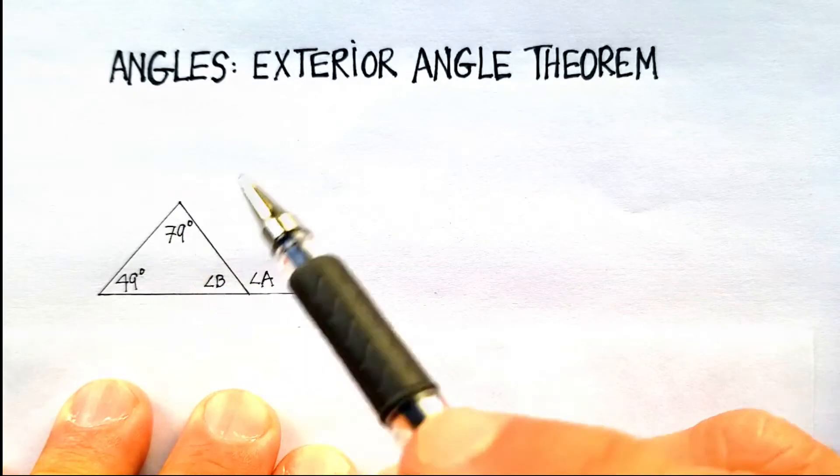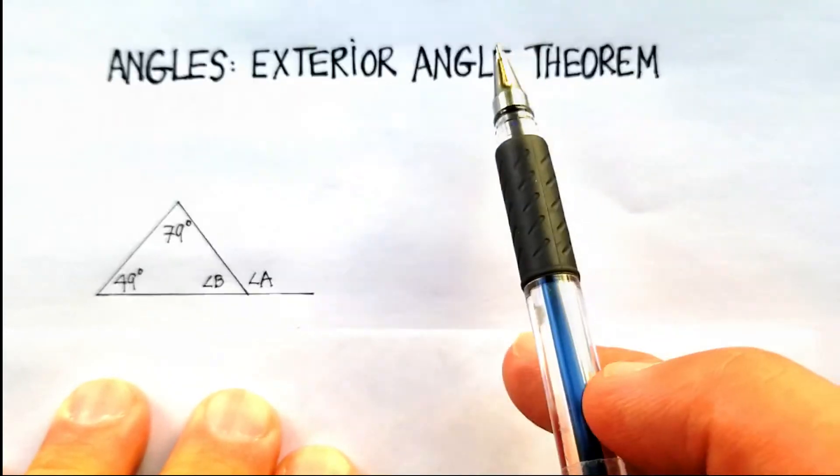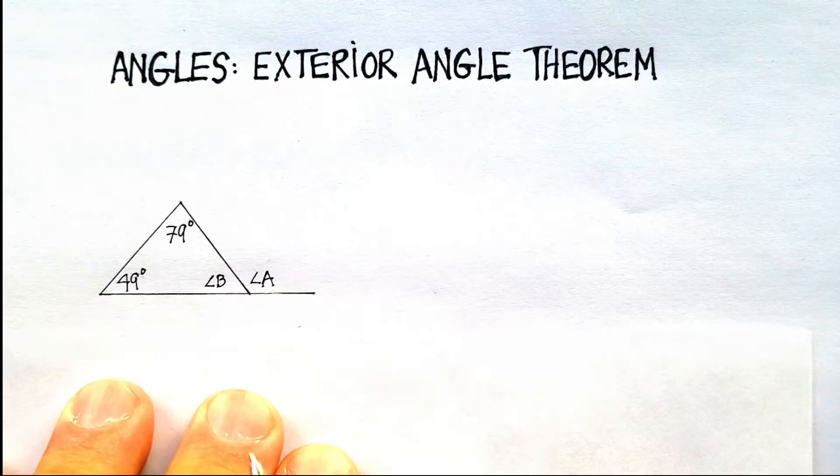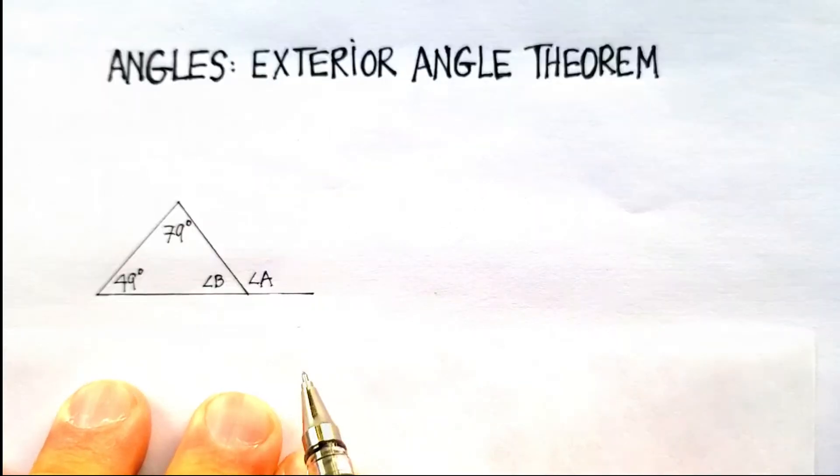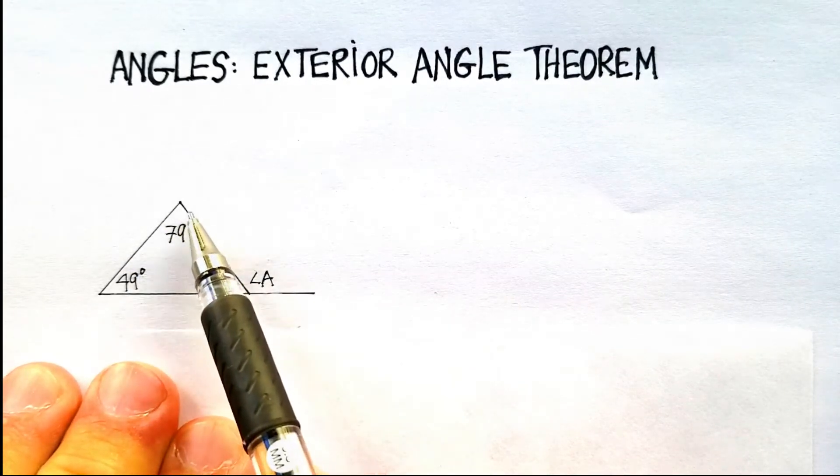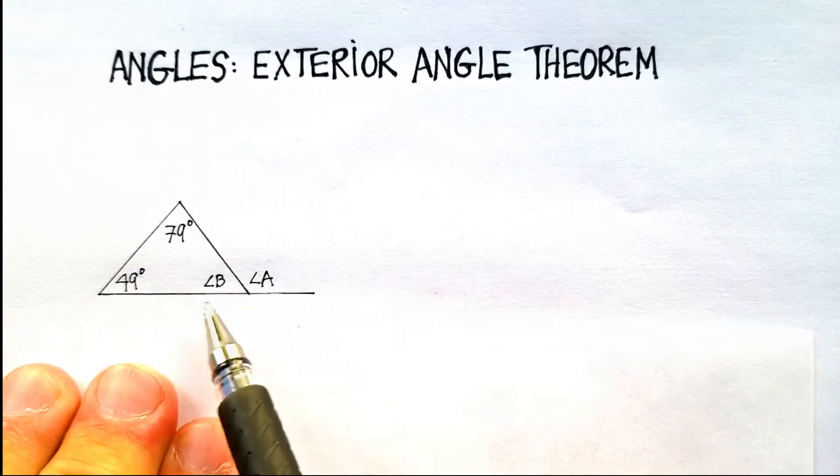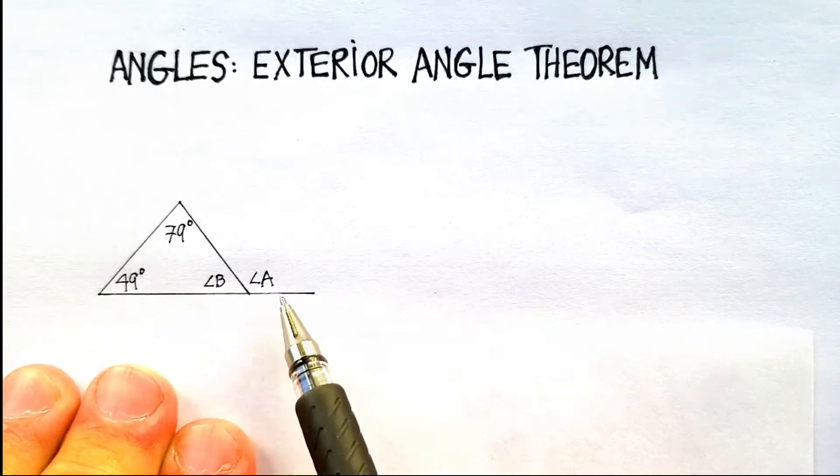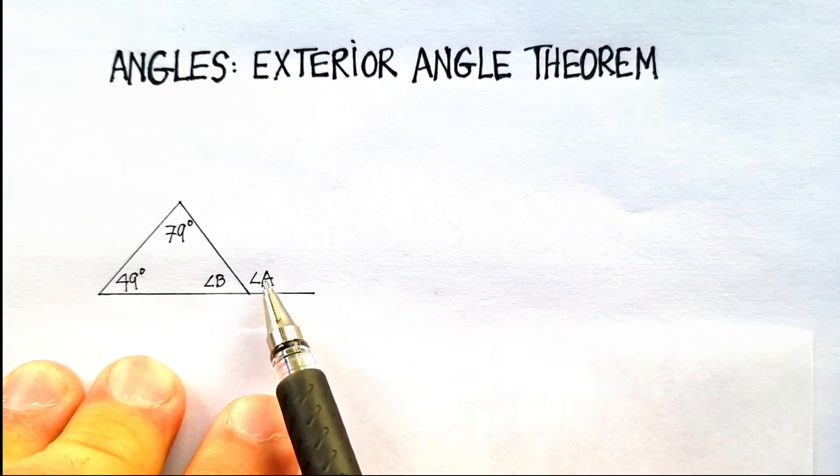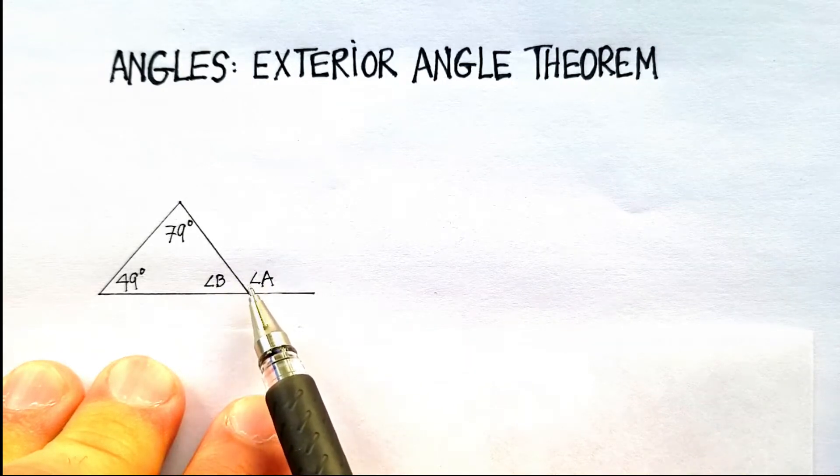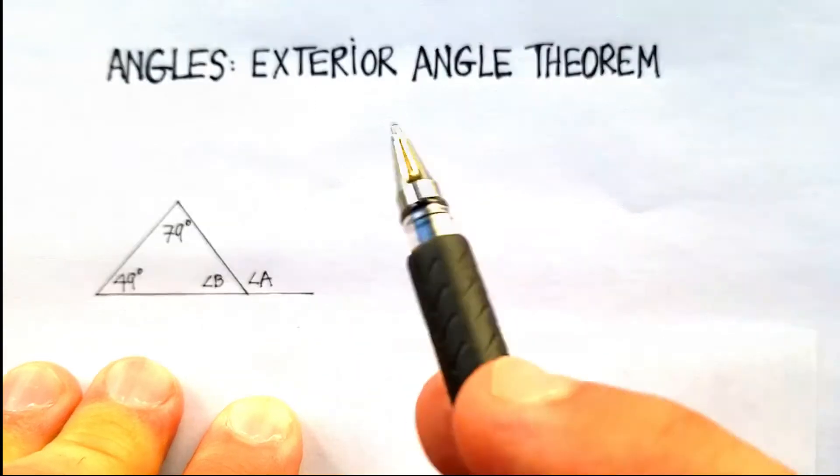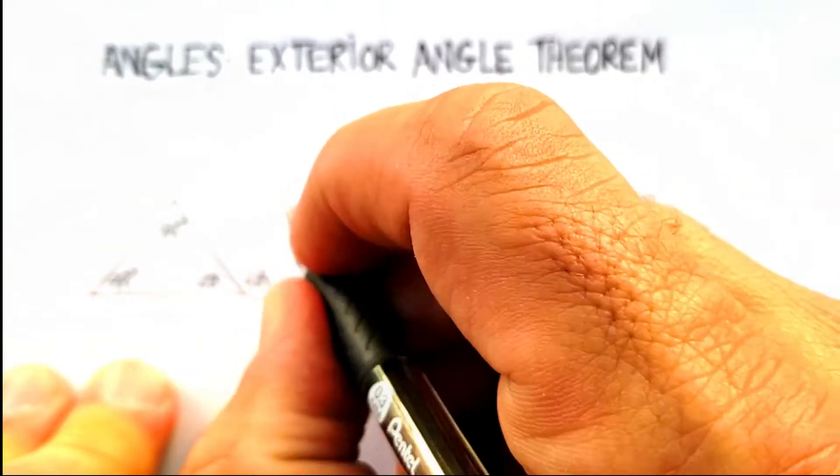We're going to be using triangles mostly for this. And then there's a theorem that's attached with this, something that's always going to be true. So this is what the exterior angle theorem says. If I have any triangle, and let's just say I take one of the sides, like I took this side right here, and I extended it into a straight line, you'll notice that I have angle A is outside the triangle. Angle A is known as the exterior angle.